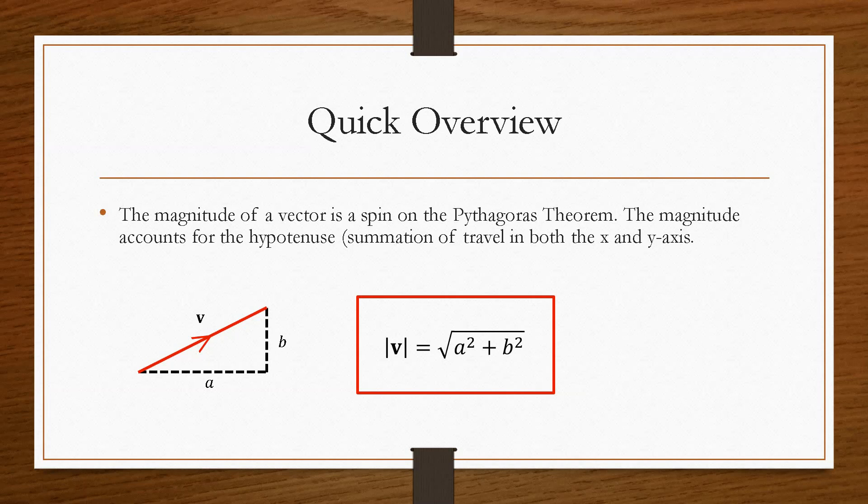So then the magnitude of a vector is essentially a spin on the Pythagoras theorem, because the magnitude accounts for the hypotenuse or the summation of travel in both the x and y-axis. So here what we're saying is that the distance between, so say this is the origin here, then this is O, this is x, and this is y.